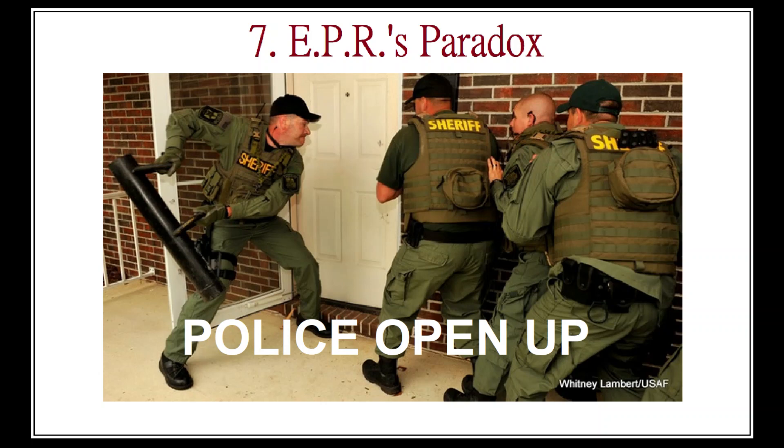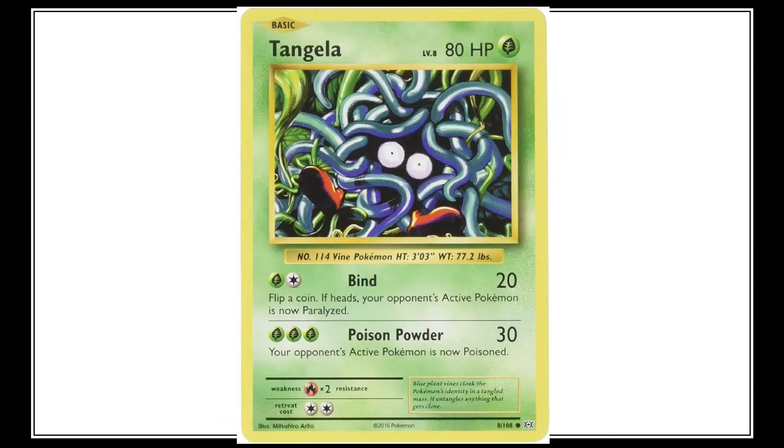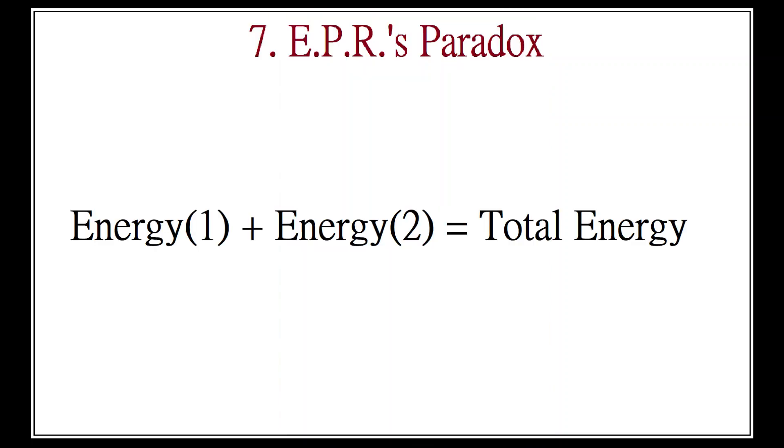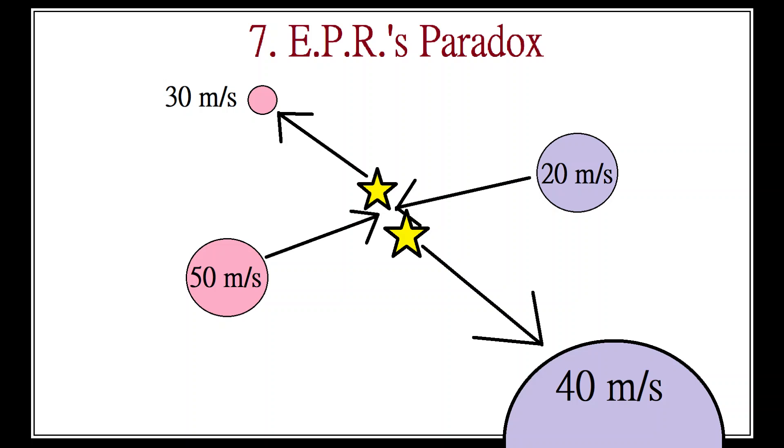Einstein, Podolsky, and Rosen employ a thought experiment that uses the idea of entanglement. Entanglement, at bottom, is just an application of the conservation of energy. If you have two objects and they interact in some way, meaning energy is exchanged between them, as in a collision, then the total amount of energy in the system stays the same. It's simply reapportioned between the objects.